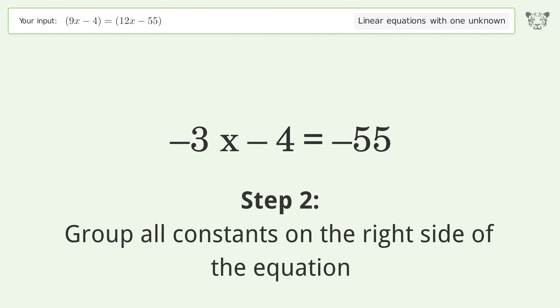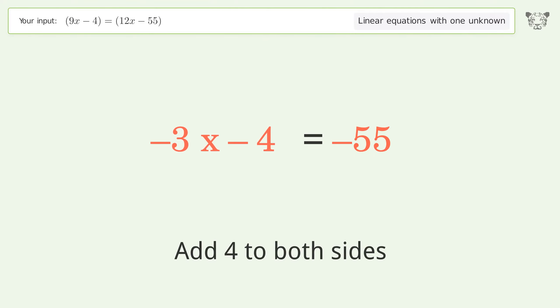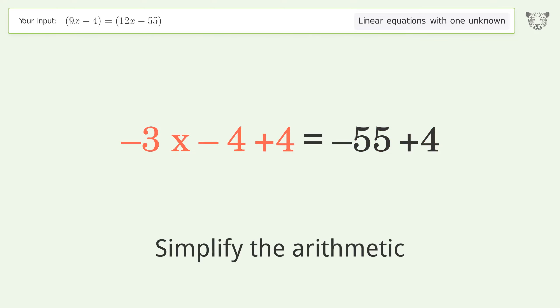Group all constants on the right side of the equation. Add 4 to both sides. Simplify the arithmetic.